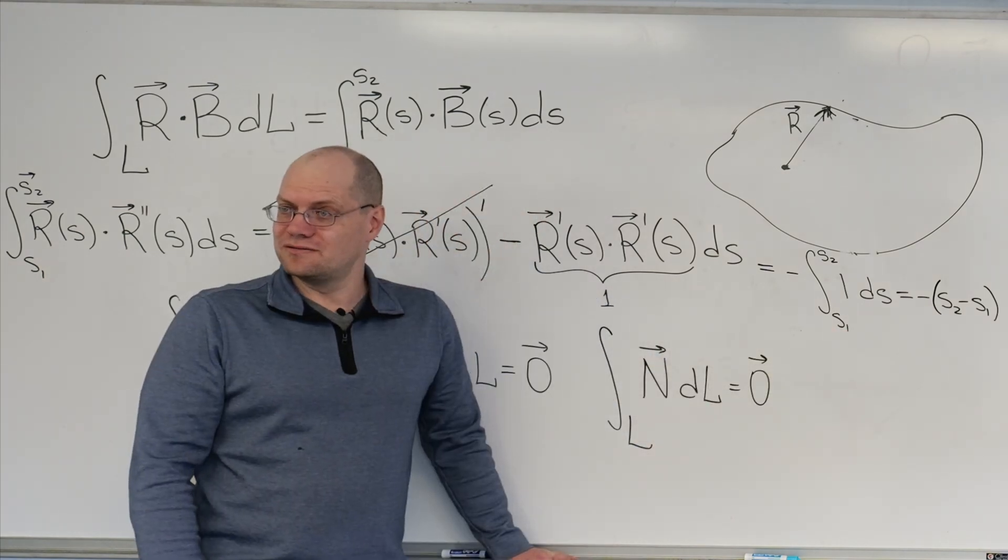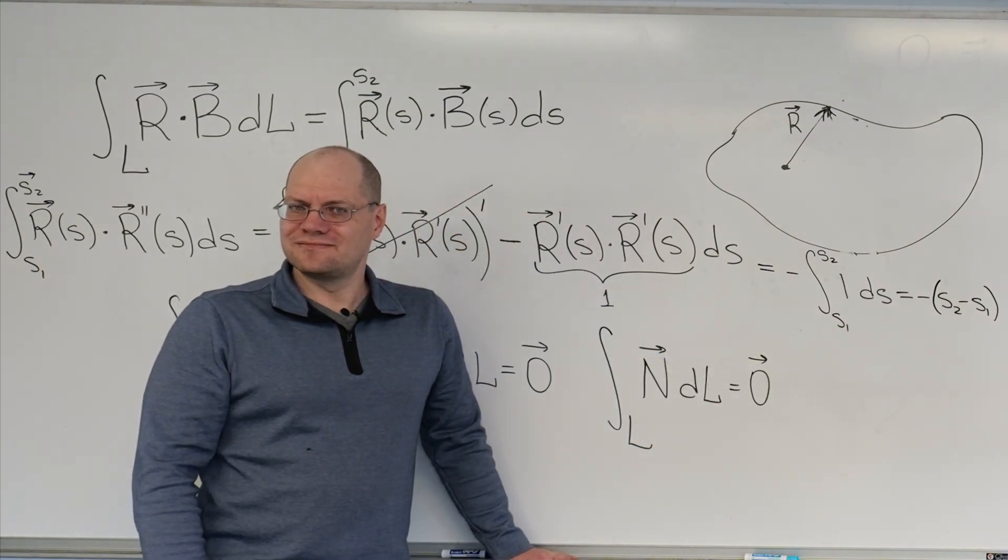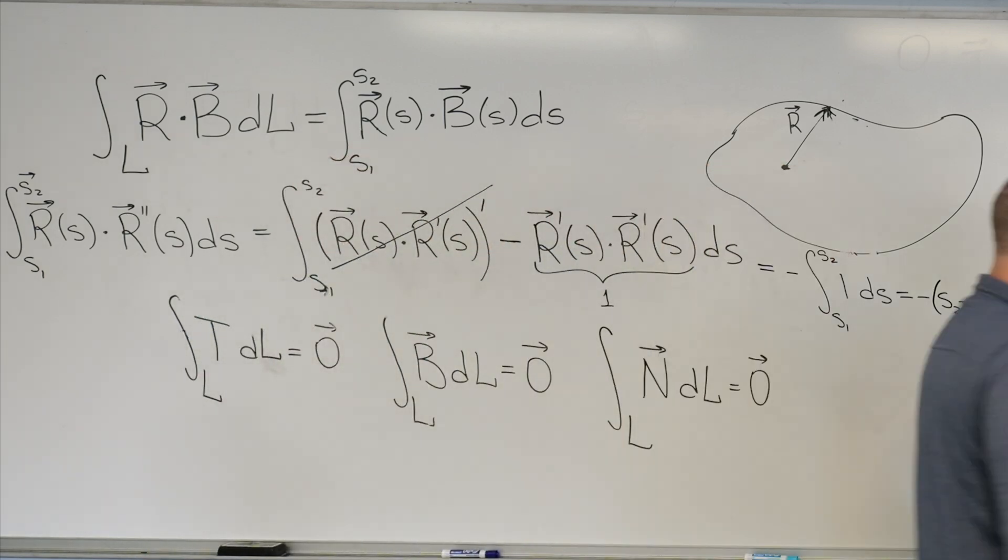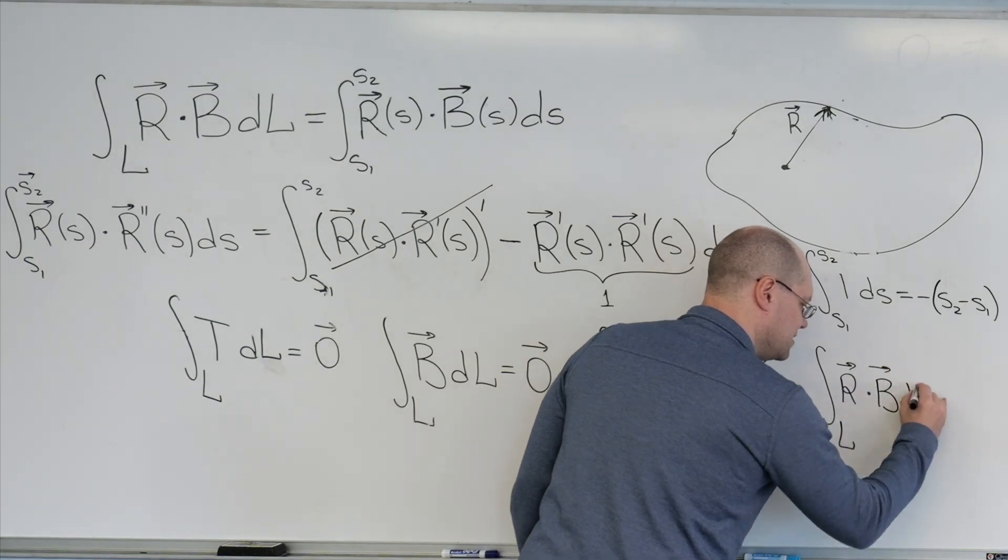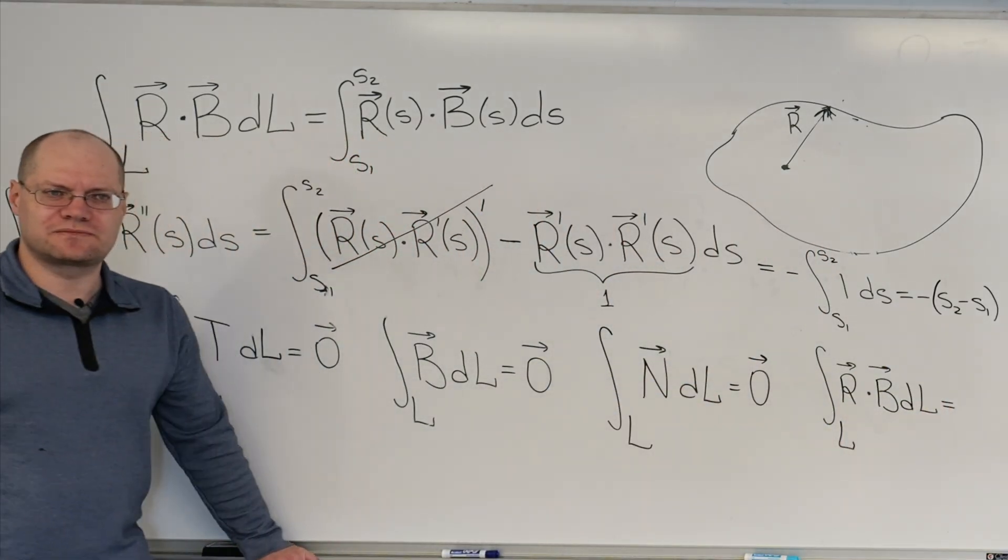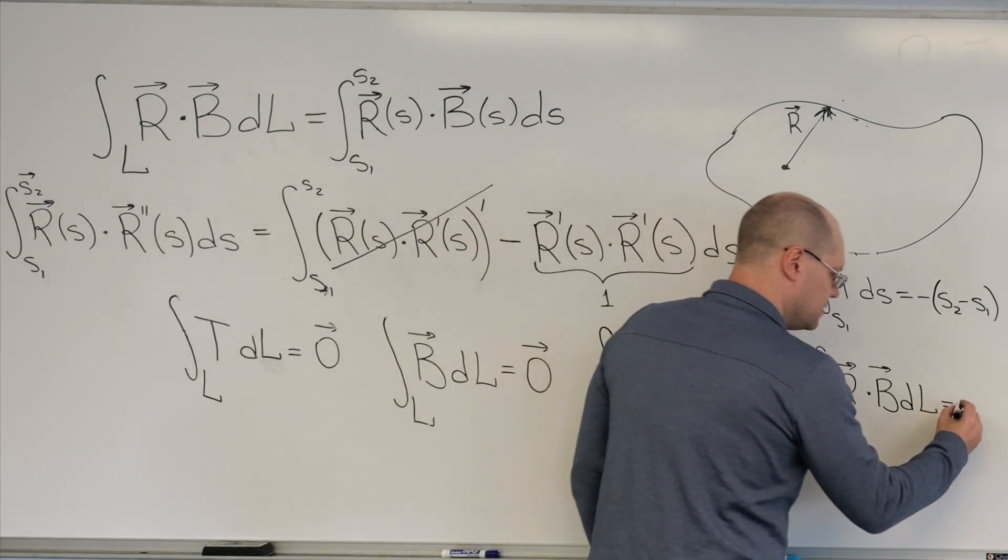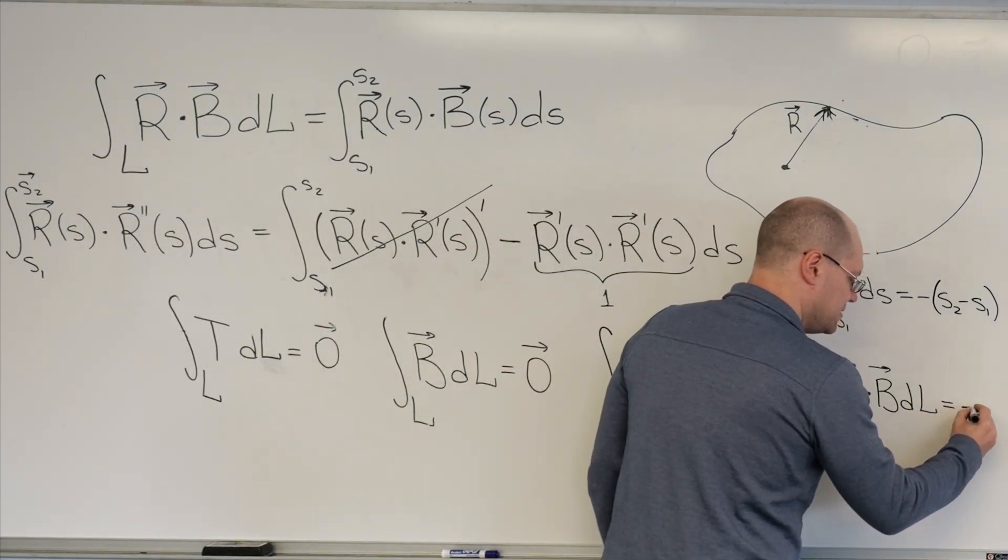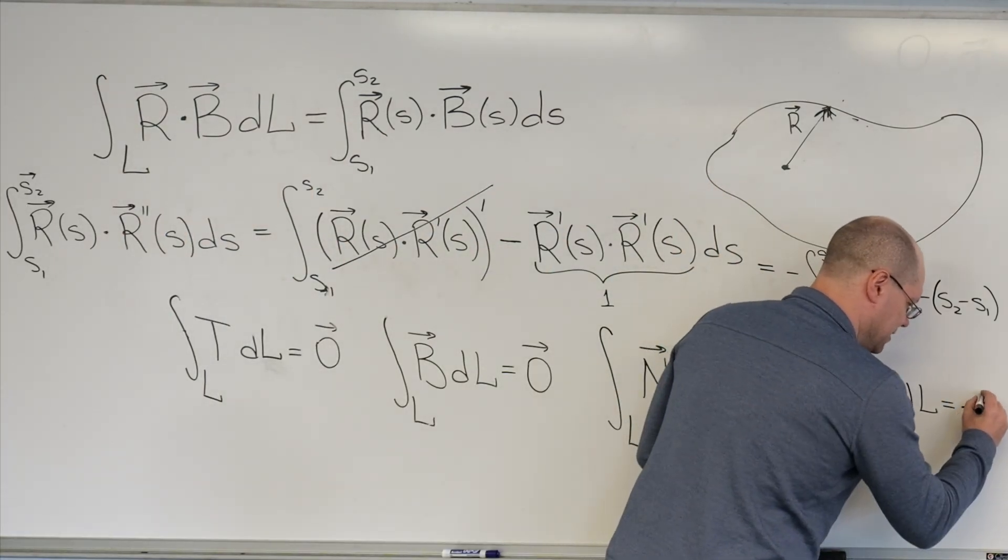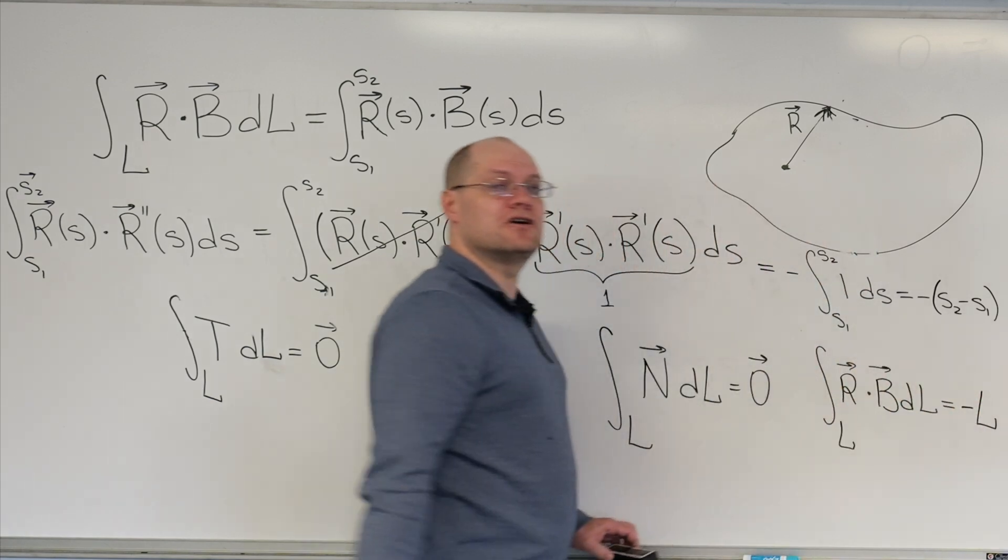Is this a beauty? Yeah, of course it's a beauty. Let's write down this beauty. For closed, right? All of these on the bottom row is for closed curve. Equals minus the length of the curve, minus capital L, the length of the curve.